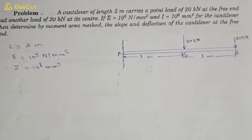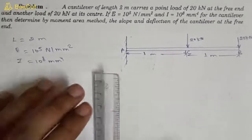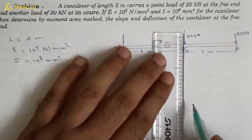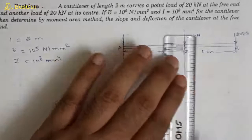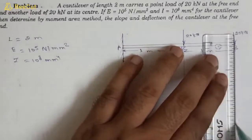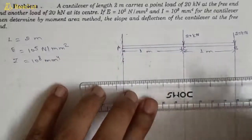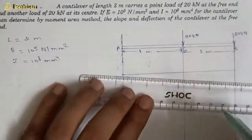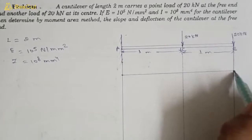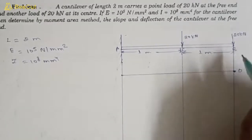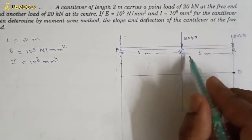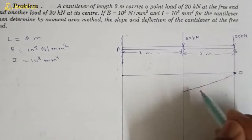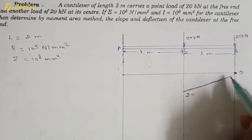We have to draw the bending moment diagram because we will use the area moment method. We draw lines through all the loads and support. The bending moment will be negative because these loads are causing hogging movement. At the free end the bending moment is zero, and at the center it will be 20 into 1, which equals 20 kilo Newton meter — a straight inclined line.